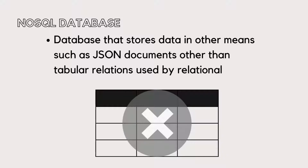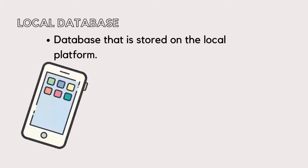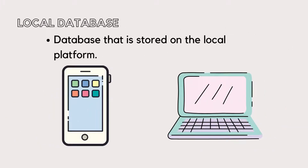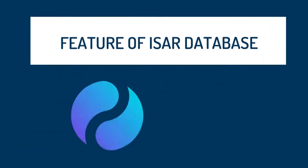It is similar to databases such as Hive and MongoDB. However, just like Hive, ESA is built locally — for instance, on a device. That's a local database. So in a nutshell, ESA database is a database that runs across multiple platforms, stores data in a non-tabular format, runs on the local platform, and it's built for Flutter.